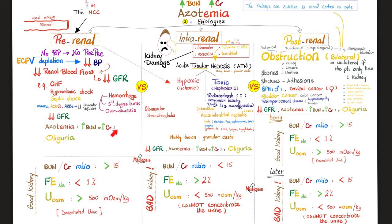In pre-renal azotemia the kidney is still functioning well, so the BUN-to-creatinine ratio is greater than 15, FeNa is less than 1% (the kidney conserves sodium), and urine osmolality is greater than 500 mOsm/kg because a good kidney concentrates urine. If untreated, this progresses to intrarenal azotemia.